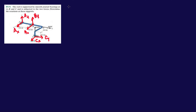Alright, first thing: draw the reaction forces — we're done with that. The next step is to sum the forces in the X direction. So the forces in X are: AX plus BX plus CX equals zero.